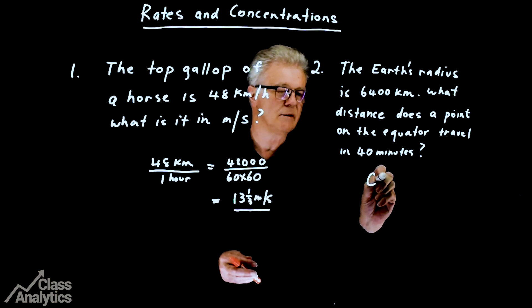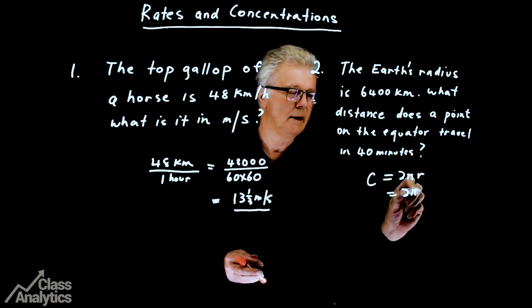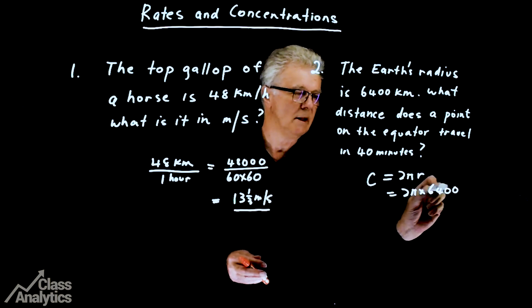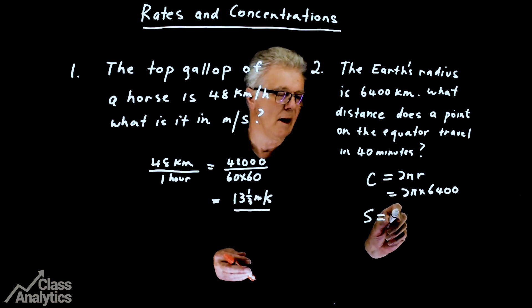To do that, we use the formula C equals 2 pi R. That's 2 pi times the radius of the Earth, 6,400. As you know, the speed is the distance divided by the time.